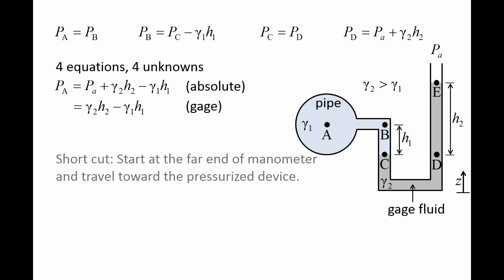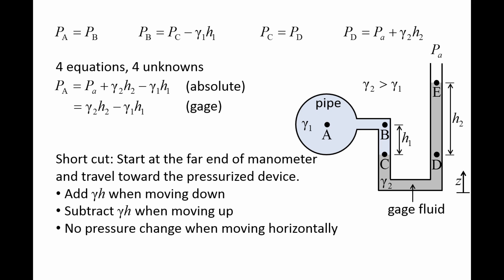Instead of solving a set of equations, we can use a shortcut to find the pressure at point A. We start at the far end of the manometer and work our way toward point A. As we travel along the manometer, we follow three rules: we will add a factor of gamma times H when moving downward through a continuous fluid; we will subtract a factor of gamma H when moving upward through a continuous fluid; and we can jump horizontally between adjacent sections of the tube if the fluid is continuous between the two points.